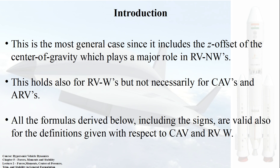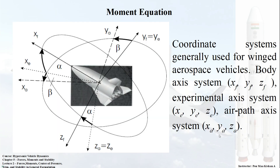The derivation part we are skipping in the lecture. I have already mentioned we are going with the theoretical aspects, but I will give you hints about what is happening in the derivation. We are also running out of time to complete the derivation parts, so you should go through the reference book for more knowledge. This lecture is a summary including signs and values for CAV and re-entry vehicle with winged configurations.